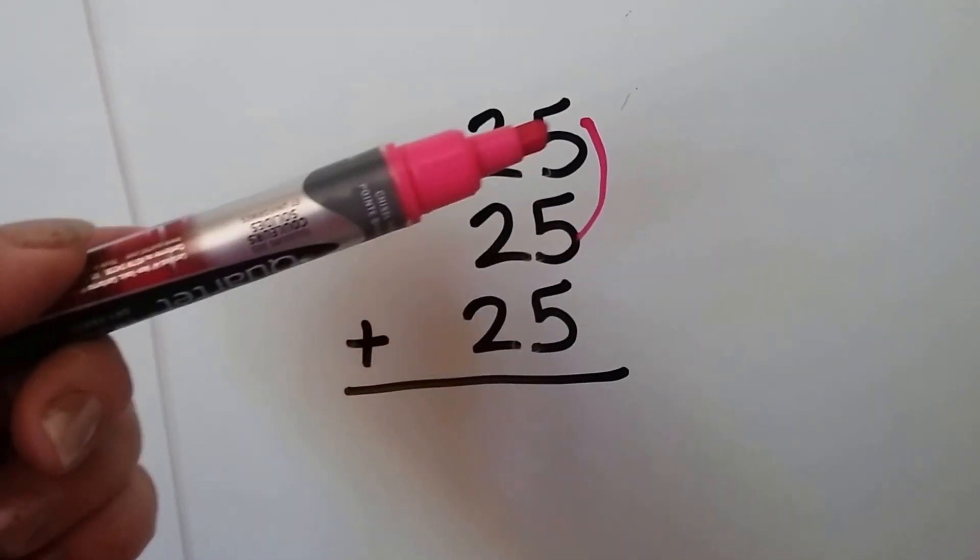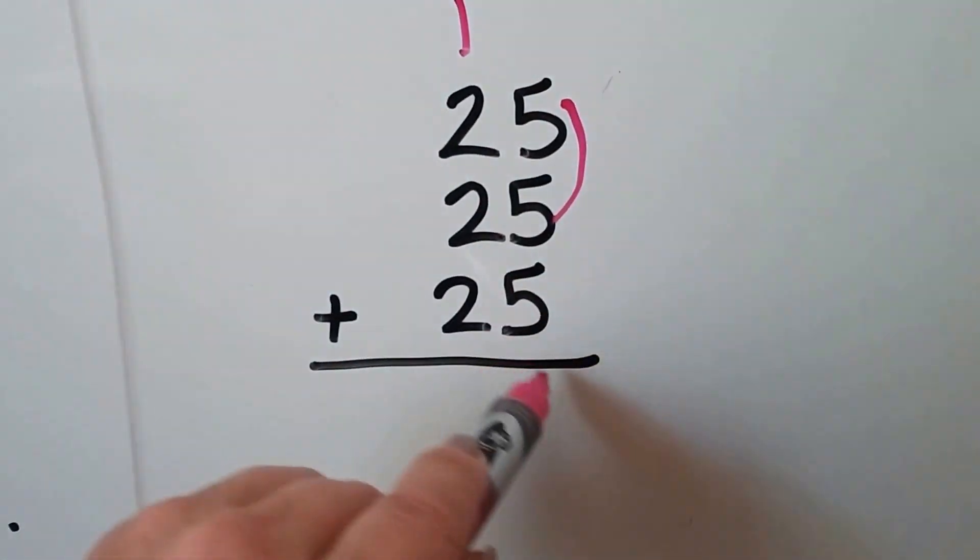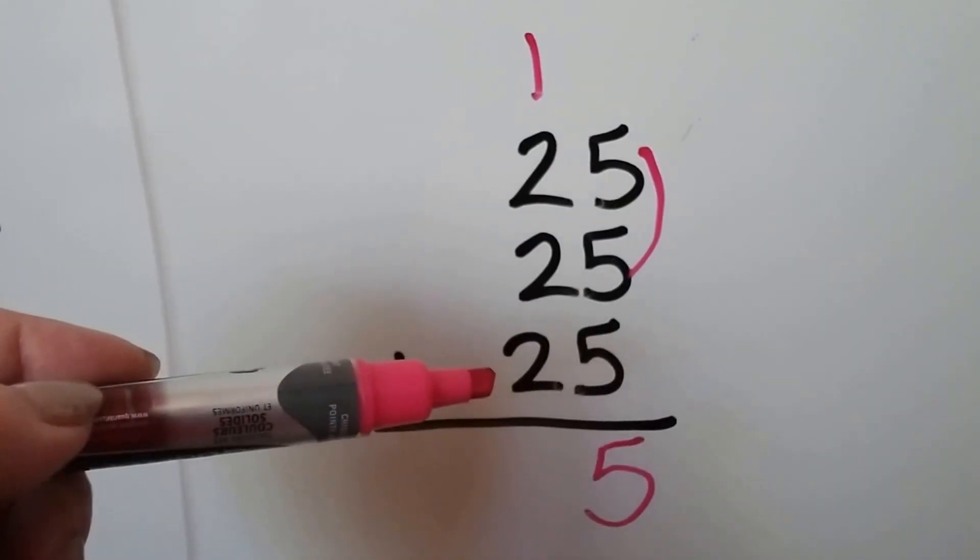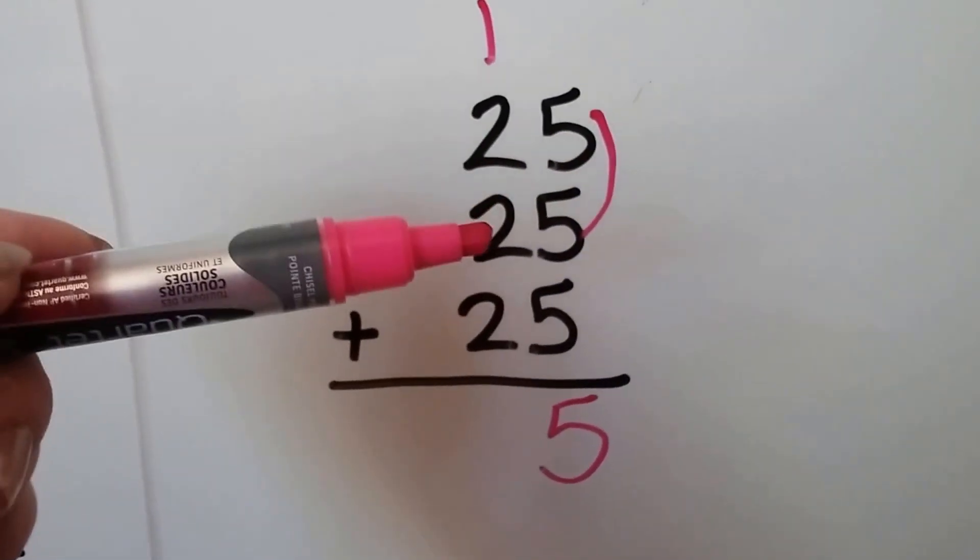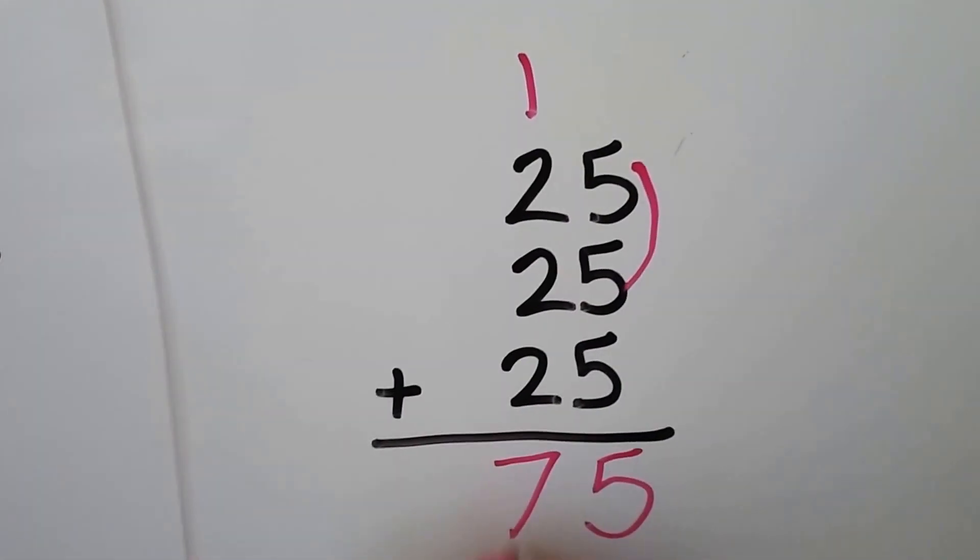We could even count by 5s: 5, 10, 15. We regroup the 1, put the 5 down. We add the tens. We can skip count by 2: 2, 4, 6, 7.